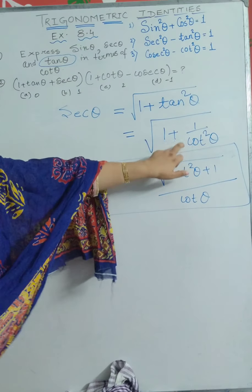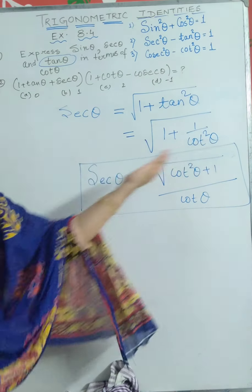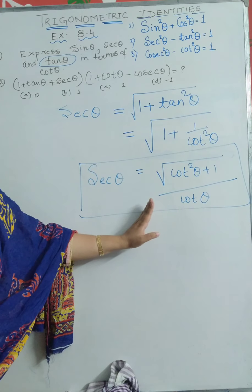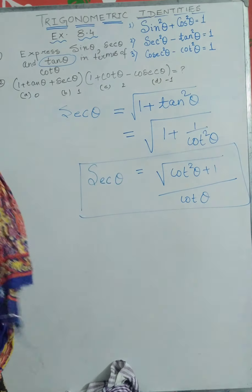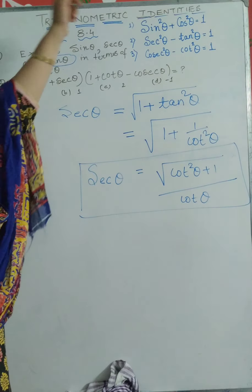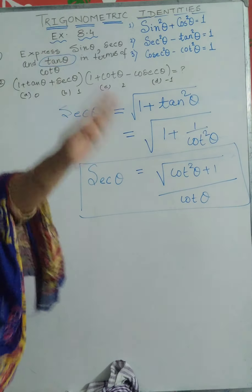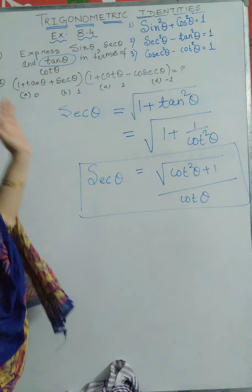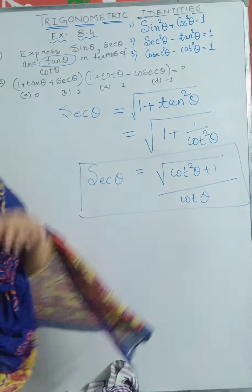This is cot²θ, and there was a square root, so I am removing the square root from the denominator. So we have expressed sin θ in terms of cot θ, tan θ in terms of cot θ, and sec θ in terms of cot θ.